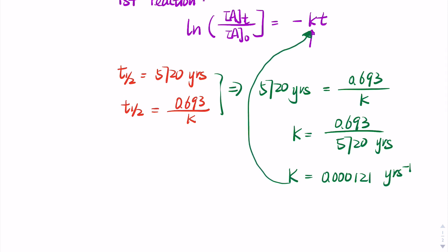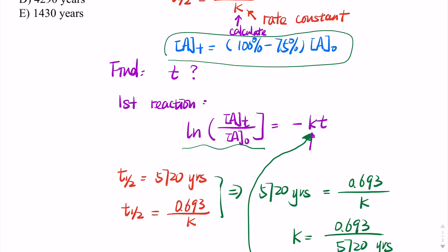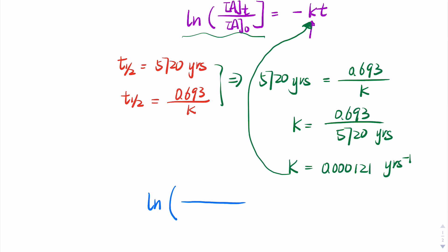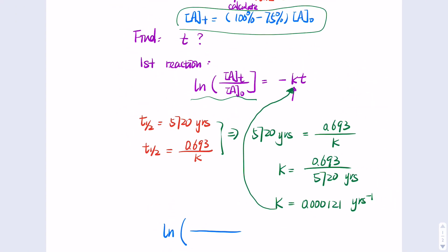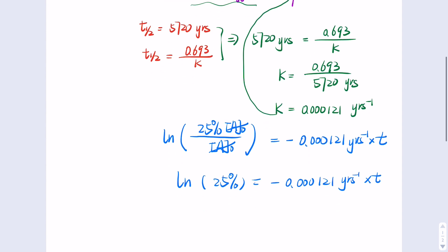Now we can put k into the equation and solve for t. We established from reading the question that the concentration at this moment is 25 percent of the initial. So we get: natural log of 25 percent of initial concentration divided by initial concentration — the initial concentration cancels out — equals negative 0.000121 years⁻¹ times t. On the left side: natural log of 0.25 equals negative 0.000121 times t.